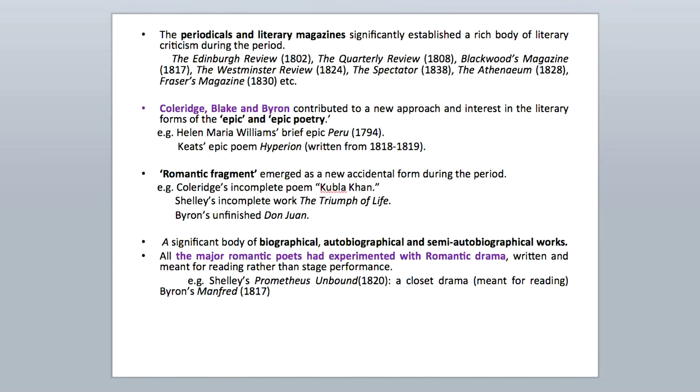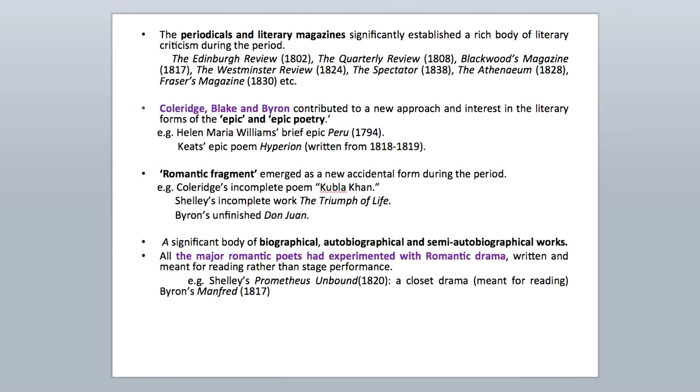The romantic fragment also emerged as a new accidental form from the period. For example, S.T. Coleridge's Kubla Khan — Coleridge wrote under the influence of opium sometimes, which is why the work became a romantic fragment: he lost his vision of writing, just forgot what he was writing about, or some kind of interruption left the work incomplete, and thus a fragment — a romantic fragment — which was still complete in itself because it was so beautiful to read, and textbooks even today prescribe these beautiful pieces. Shelley's incomplete work The Triumph of Life and Byron's unfinished Don Juan are also examples of the romantic fragment.